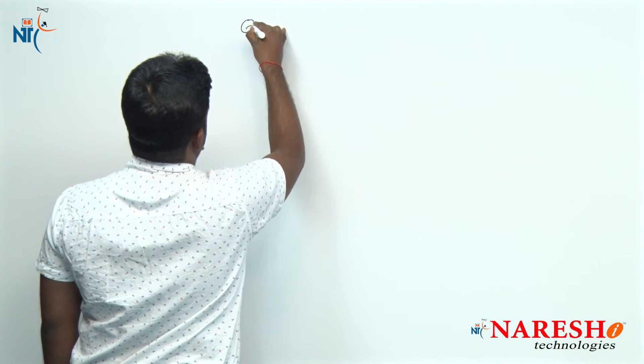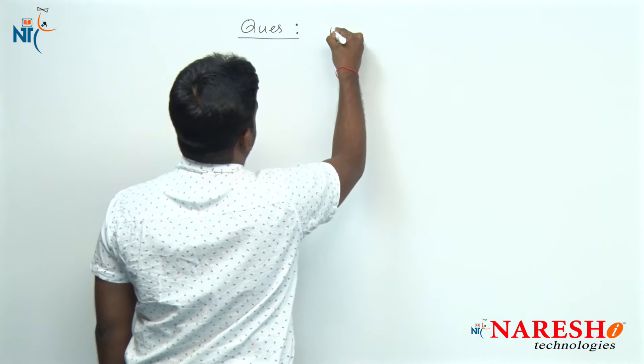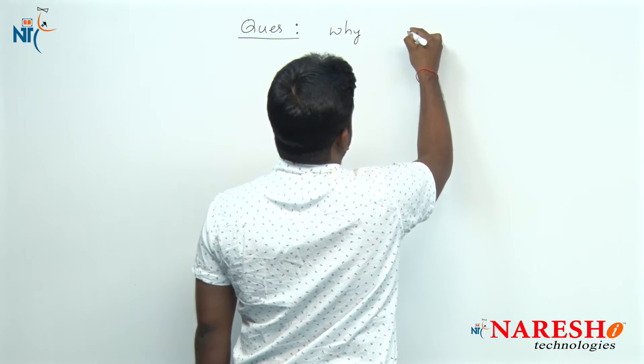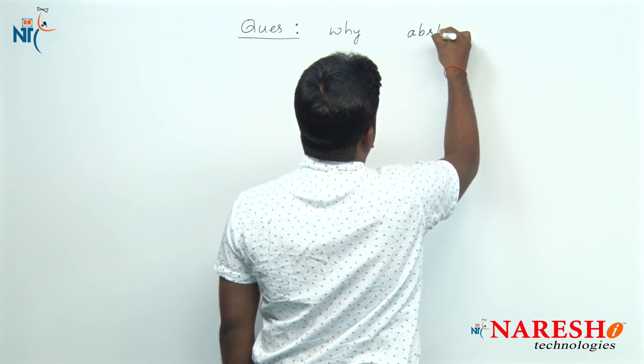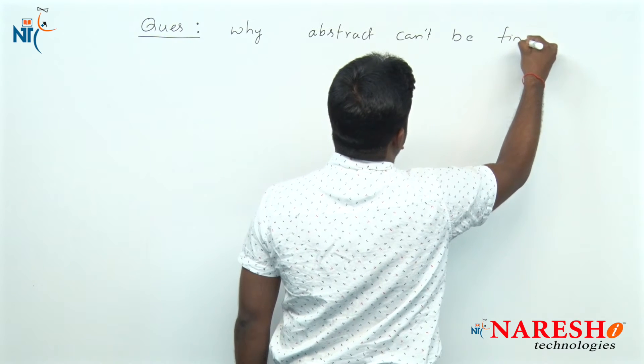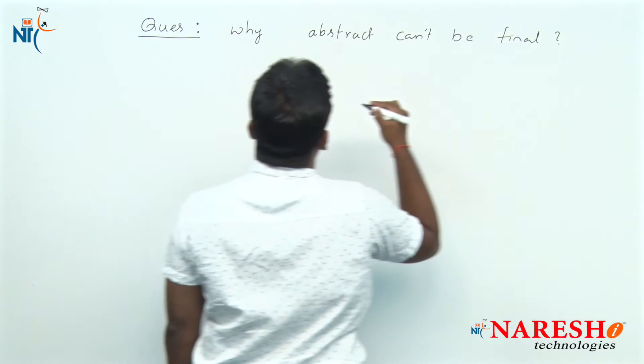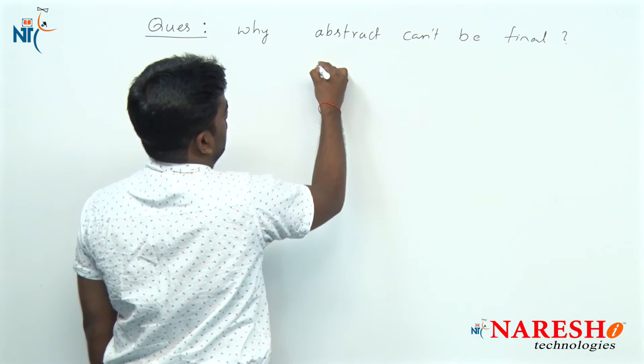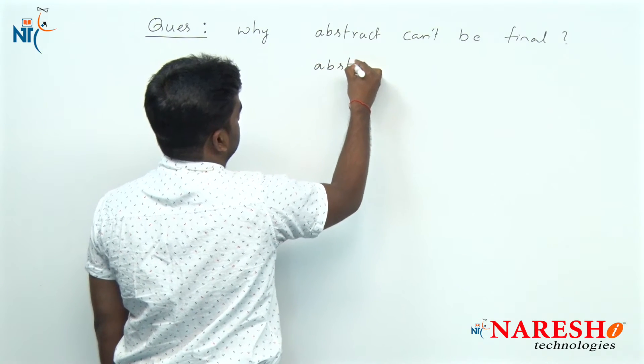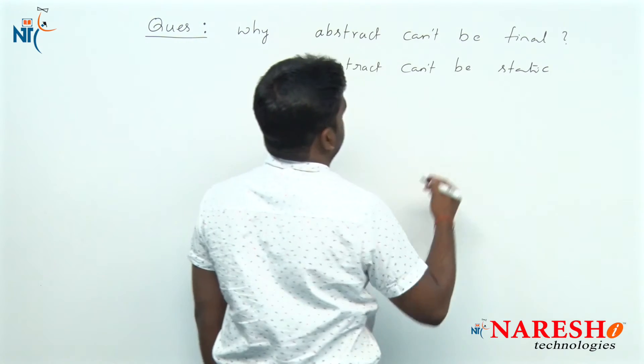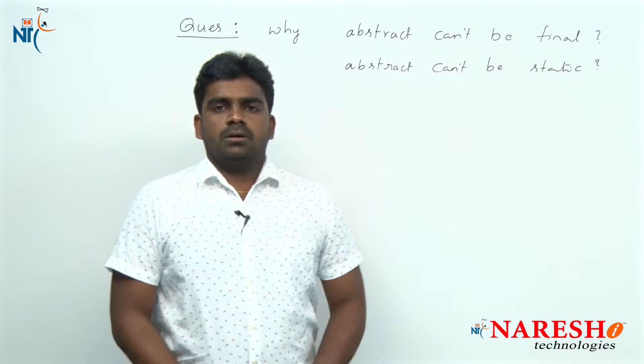The question is: why an abstract method cannot be final, and why an abstract method cannot be static.